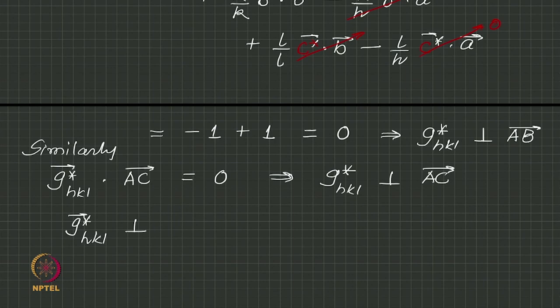This is g star h k l is perpendicular to 2 vectors in the plane. So g star h k l is perpendicular to the entire plane a b c, which is the h k l plane.